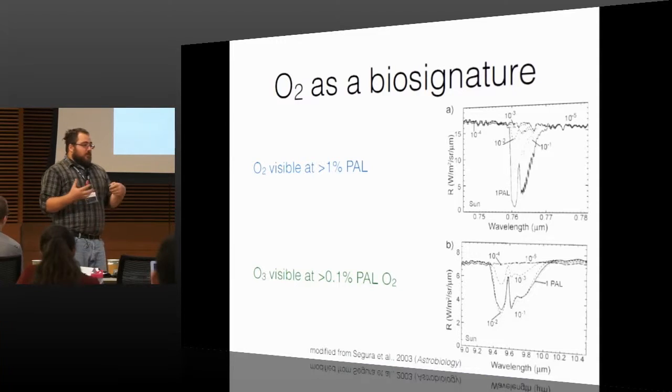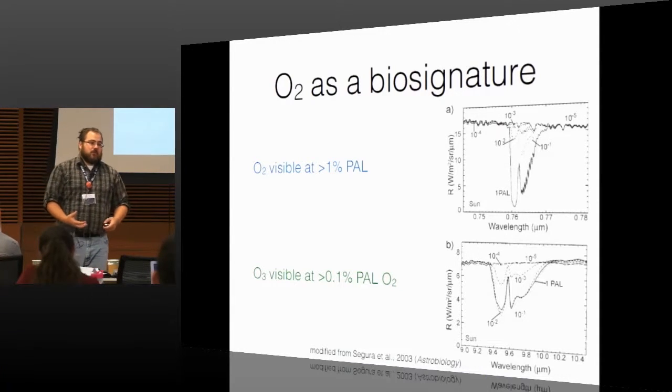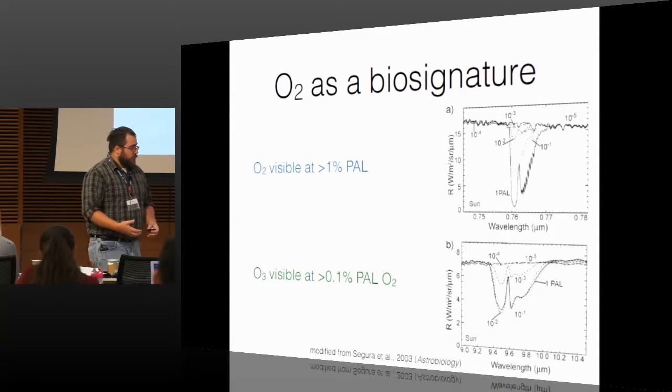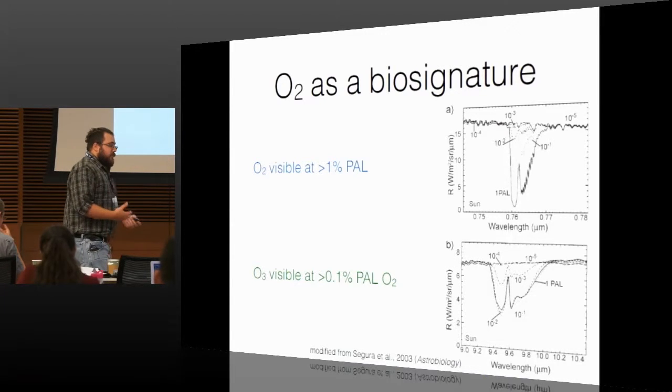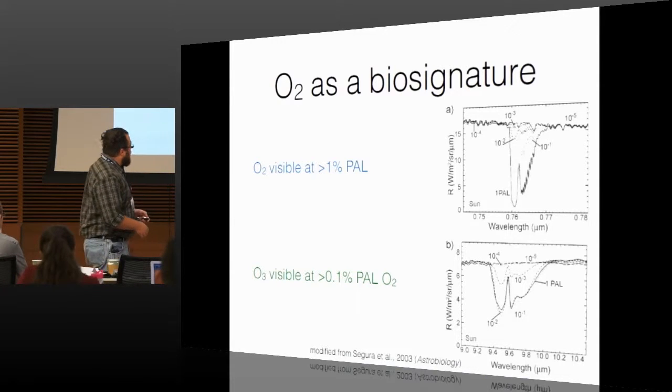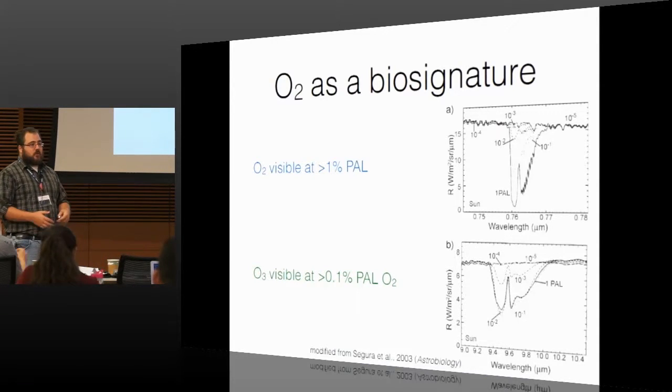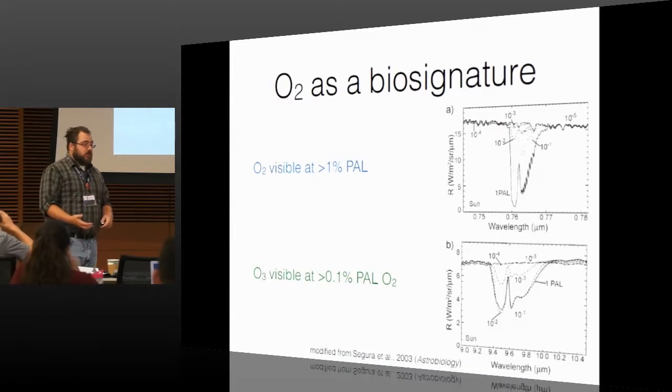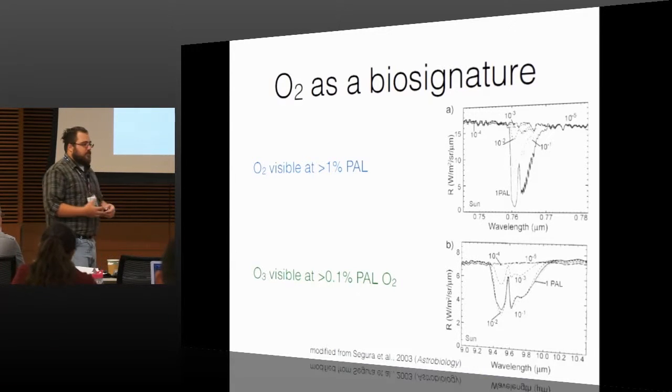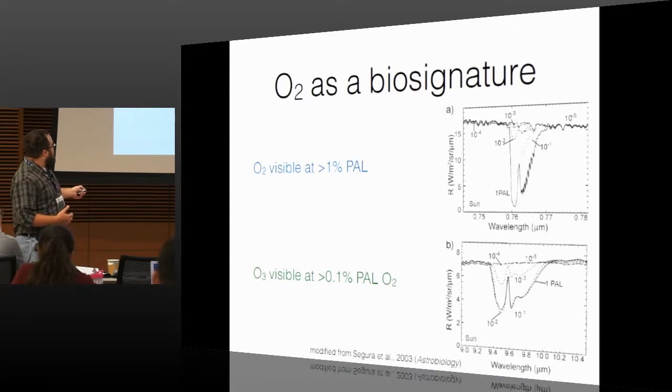Now, one of the biggest biosignatures in the terrestrial system is the oxygen that we are breathing now. It is predominantly formed by biology on the present Earth. And oxygen has been suggested as a biosignature for basically 50 years at this point. And it's had its ups and downs. There have been some suggestions that oxygen could have other abiotic sources. But oxygen is wonderful because it has this big feature here at 0.76 microns that is pretty deep, and we can see that. So oxygen is visible at about greater than 1% the present atmospheric level.